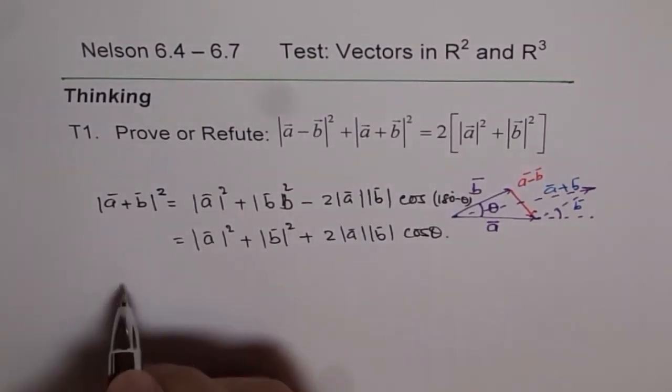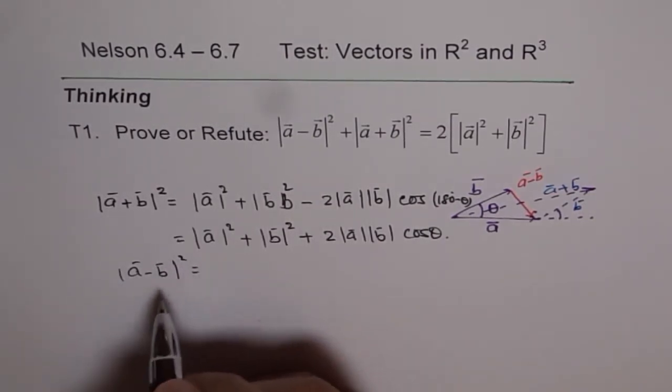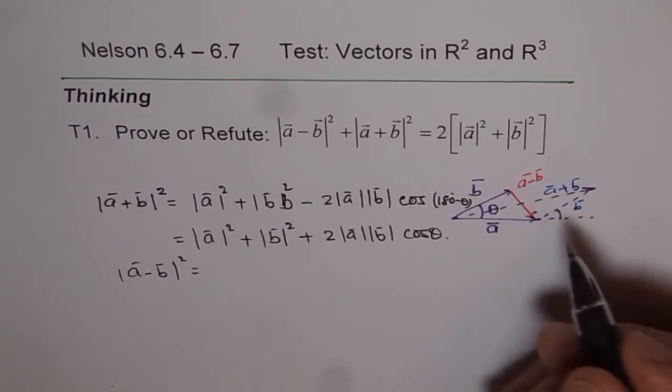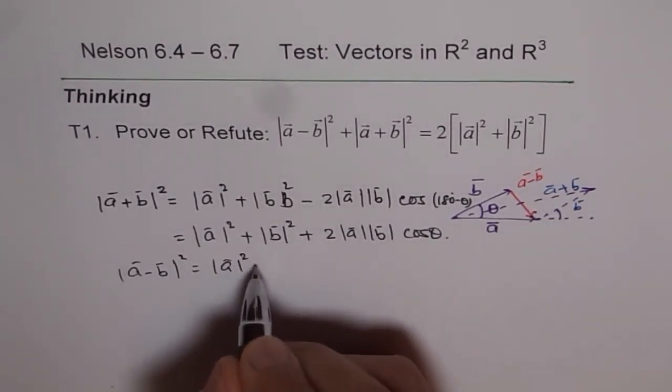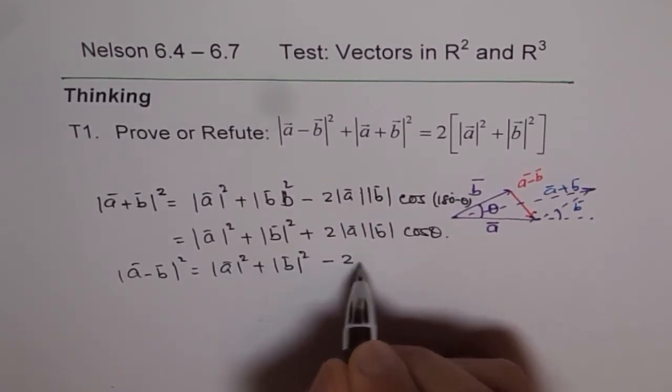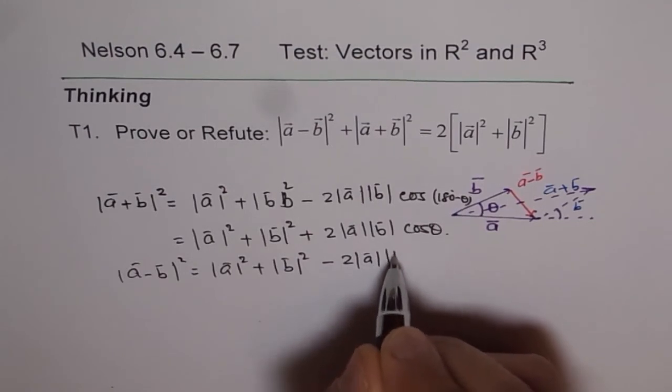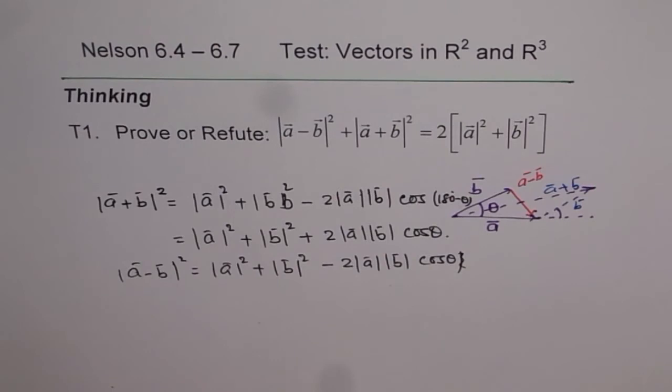However, when you do A⃗ - B⃗, then the magnitude square of that using cosine law will be |A⃗|² + |B⃗|² minus 2|A⃗||B⃗|cos θ. So that is the formula.